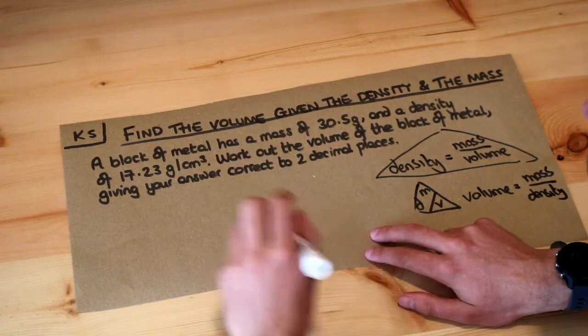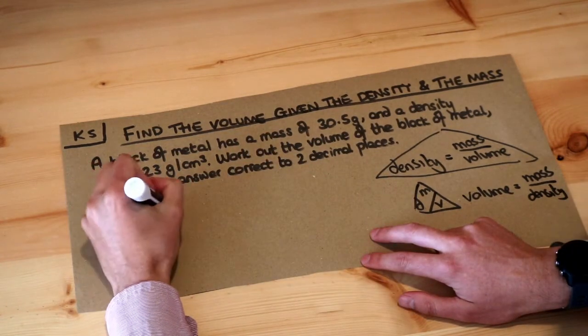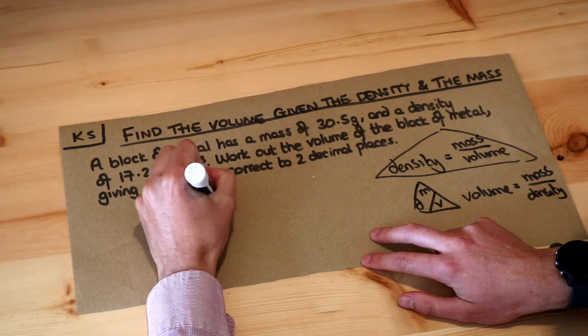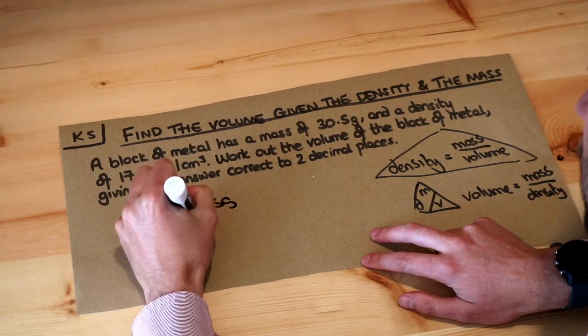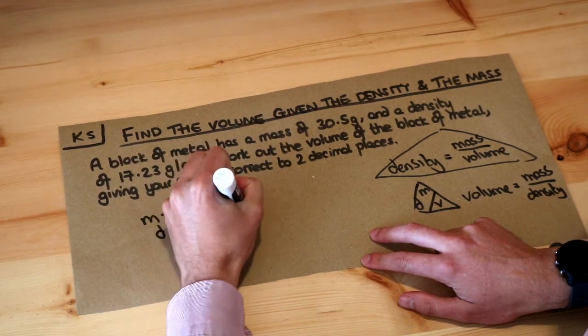So let's write the values we've got here. Our mass is 30.5 grams, and the density is 17.23 grams per centimeter cubed.